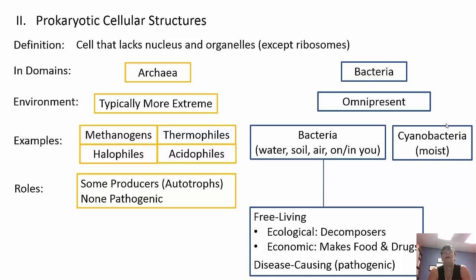Prokaryotic cells do not have a nucleus; the only organelles they have are ribosomes, which make proteins. There are two domains: archaea and bacteria. Archaea live in extreme environments — very hot, very acidic, methane-fueled, or very salty. They are classified as methanogens, thermophiles, acidophiles, or halophiles. Bacteria are everywhere; familiar names like E. coli, Staph aureus, and Strep are all bacteria.